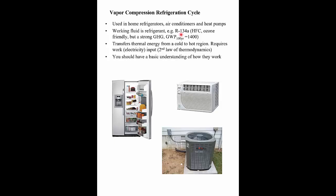We'll talk about CFCs and the destruction of the stratospheric ozone layer in another presentation. One of the problems with refrigerants in air conditioning systems today is that while they're ozone friendly now, they are very strong greenhouse gases. R134A has a 100-year global warming potential of about 1,400 — so it's about 1,400 times worse than CO2 in terms of its climate change potential. We're going to talk about ozone depletion and global warming later in this course.